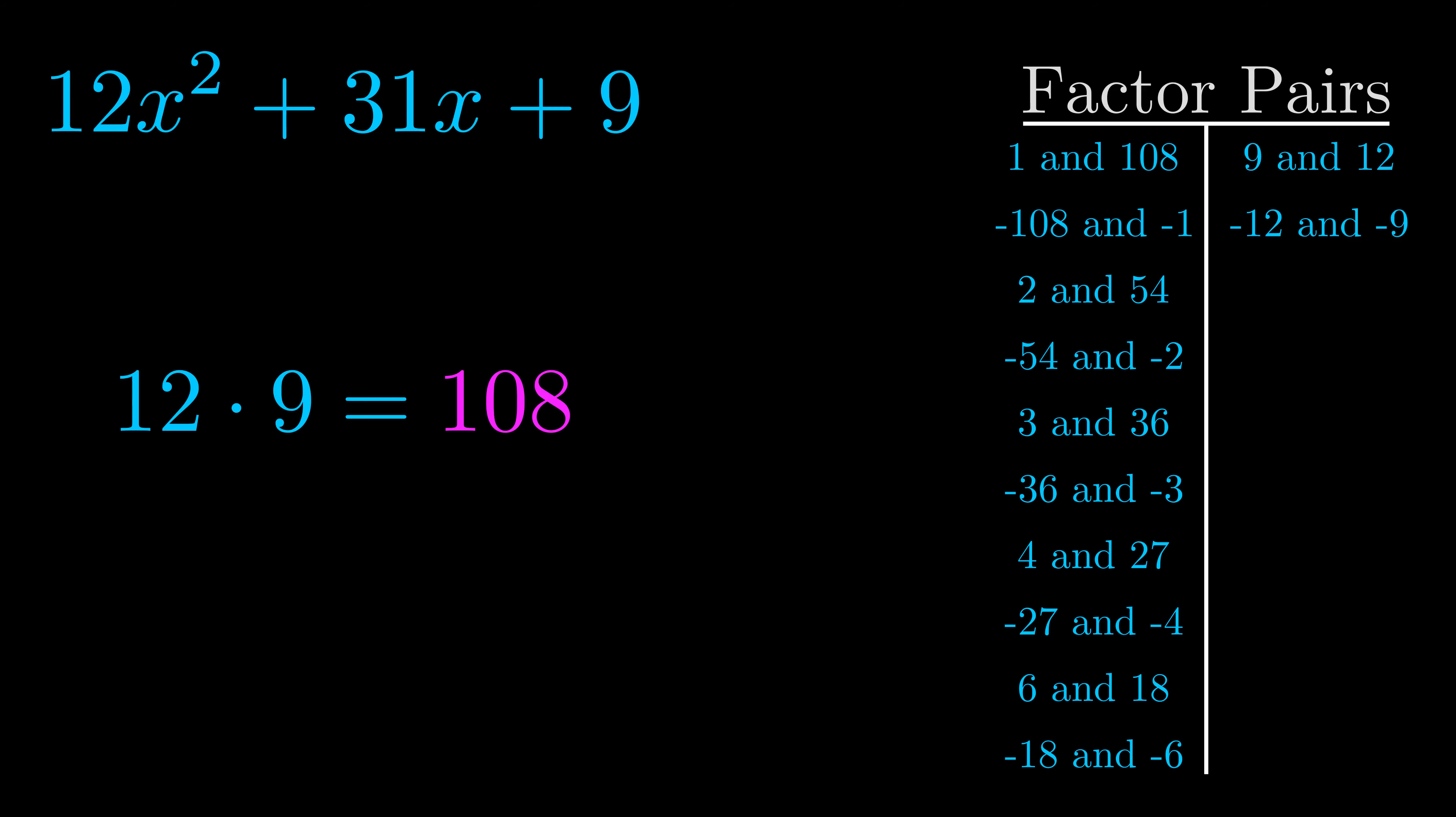The b value is the coefficient on the x term. That's the middle term, the one that we haven't done anything with yet. And really this is the only factor pair that we need.